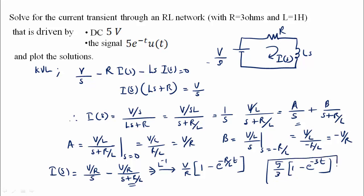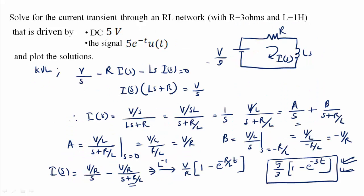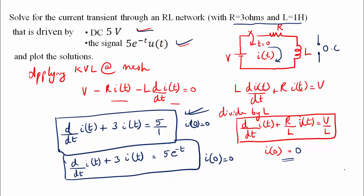So we will get the solution. The final answer is i(t) equals V/R times (1 minus e raised to power minus Rt/L). Let us verify this by doing the MATLAB programming.